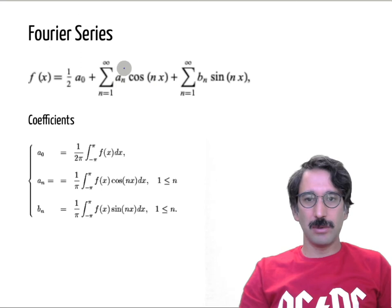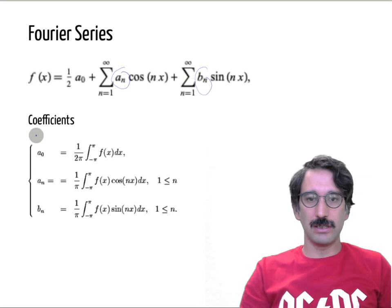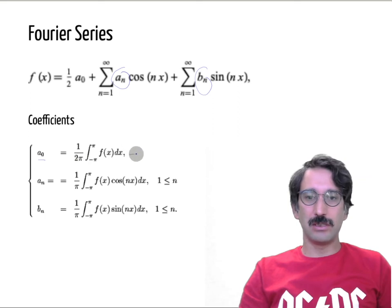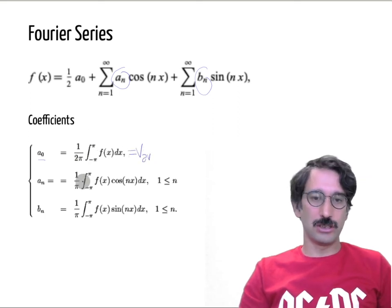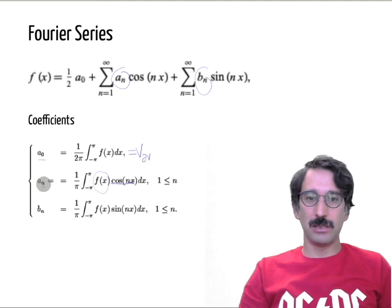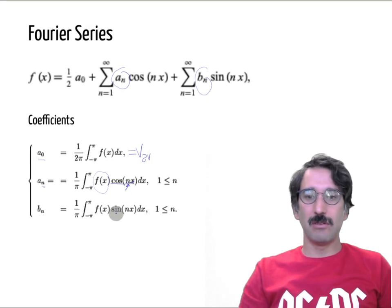Before those simplifications, let's talk about how we calculate Fourier coefficients. The DC coefficient a0 is calculated by integrating the function from −π to π and taking the average — basically the average voltage. For any other component an, you take the original function, multiply it by cosine(nωt), and integrate. For example, for the third harmonic you multiply by cosine(3ωt). Similarly, bn uses multiplication with the sine waveform.